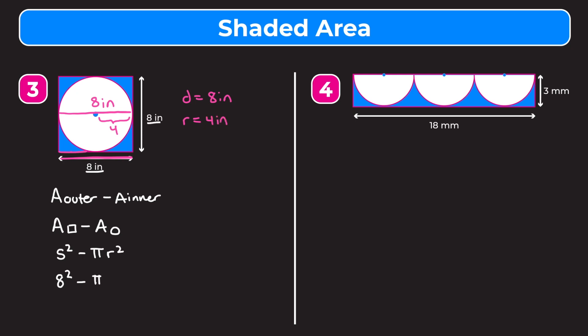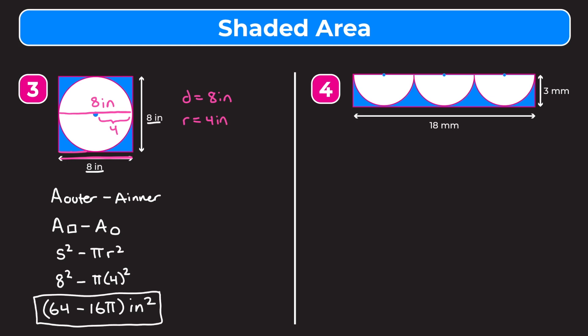Plugging in our radius of 4 inches and simplifying: 8 times 8 is 64, minus 4 times 4 which is 16, so we write this as 16 pi. We get 64 minus 16 pi inches squared. You can leave your answer in terms of pi, or plug it into your calculator using 3.14 for pi to get a decimal value.